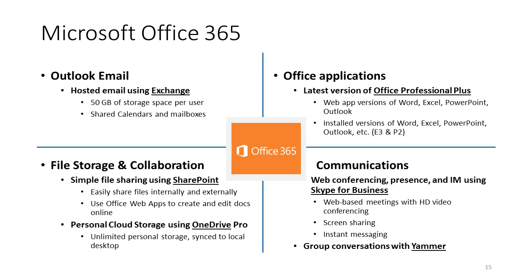In the communication space, there are two features available. Skype for Business provides instant messaging, video chat, web-based meetings, and screen sharing options for everyone in the organization — you can also invite external constituents to participate as well. Group conversations are handled with Yammer, which is like an internal or private social network where you can post stories, pictures, events, and informational content that you don't want released publicly like on Facebook, but want shared with internal or select external constituents.